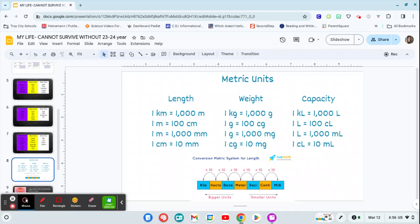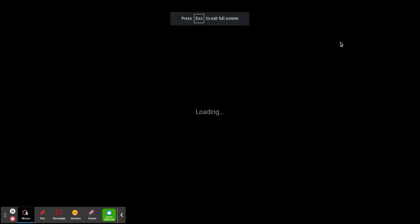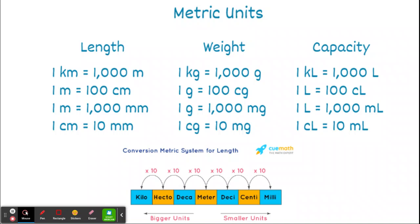Hey there, fifth graders! Welcome to today's homework help video for the week of March 11th. This week's homework is revisiting the metric units of measurement. In fifth grade, we focus on three types of measurement: length, weight, and capacity. Length uses meters, centimeters, millimeters, and kilometers. Weight uses grams, centigrams, milligrams, and kilograms. Capacity uses liters, centiliters, and milliliters.